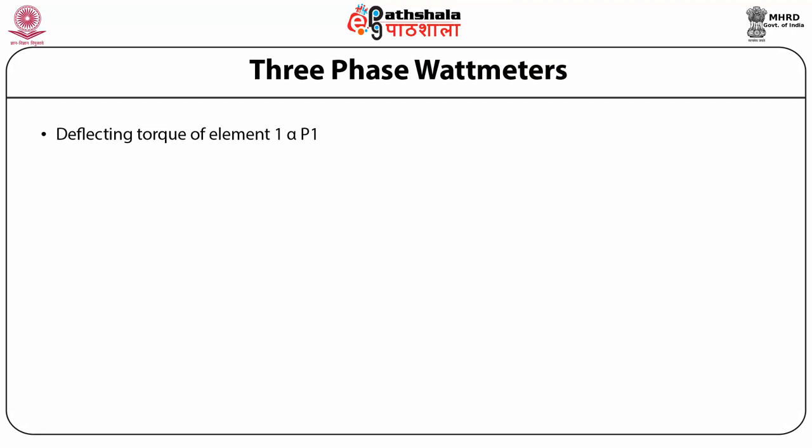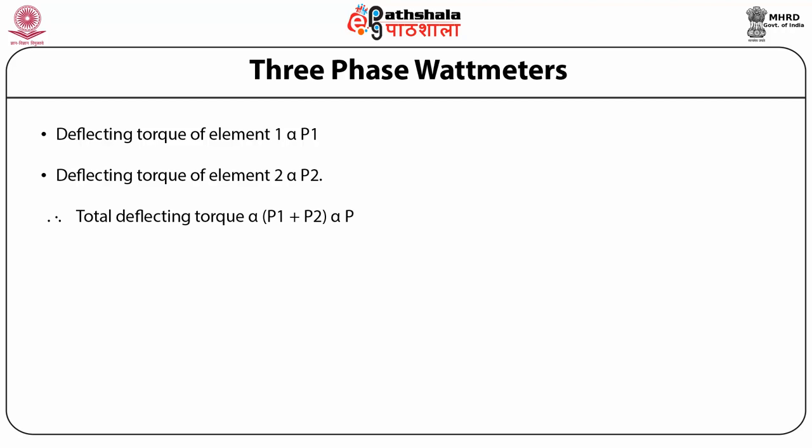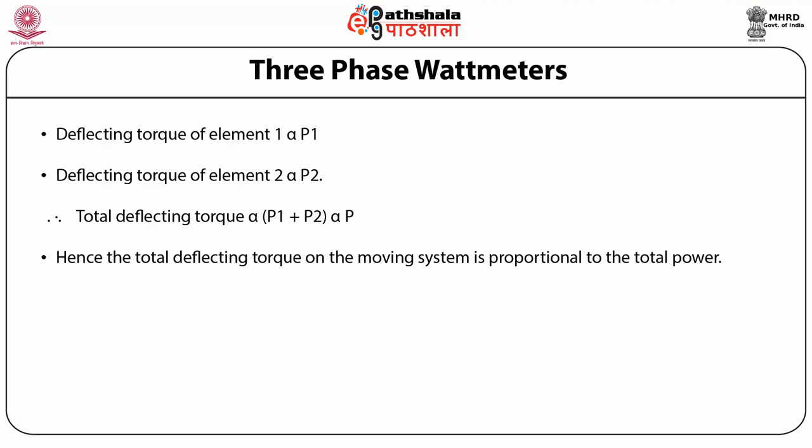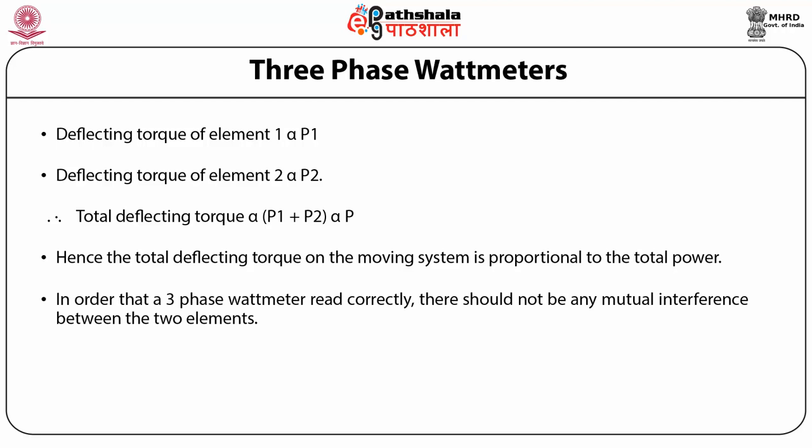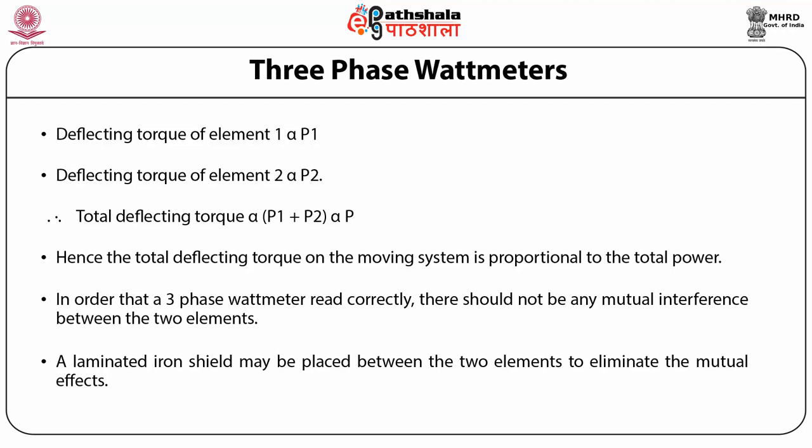The torque on each element is proportional to the power being measured by it. The total torque deflecting the moving system is the sum of the deflecting torques of the two elements. The deflecting torque of element 1 is proportional to P1 and element 2 is proportional to P2. Therefore, the total torque is proportional to P1 + P2, i.e., the total power. In order that a three-phase wattmeter may read correctly, there should be no mutual interference between the two elements. A laminated iron shield may be placed between the two elements to eliminate mutual effects.